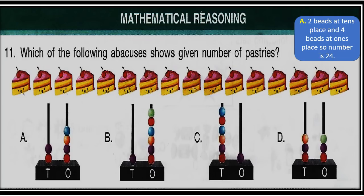Question 11: Which of the following abacuses shows the given number of pastries? Count the number of pastries in the figure and choose the correct option. The options are given in the form of tens and ones — count the beads at the tens and ones place and write the corresponding number. For example, option A has 2 beads at tens place and 4 beads at ones place, so the number is 24. Calculate similarly for options B, C, and D.